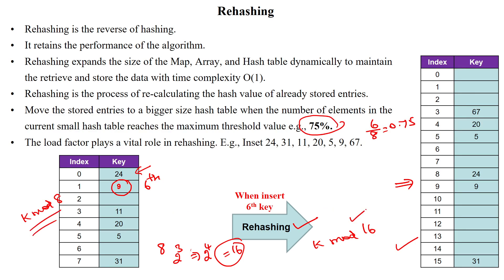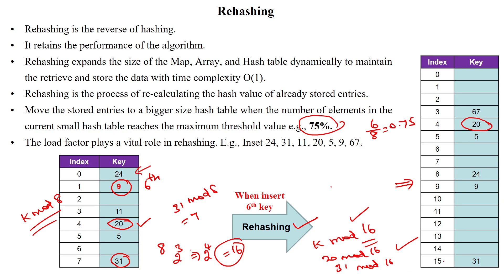Previously we applied K mod 8, but now we have to rehash and rearrange the elements based upon K mod 16. For example, when applying K mod 16, the value 20 is stored in the 4th location — same as before. For 31: 31 mod 8 gives 7, but 31 mod 16 gives 15. So 31 is stored in the 15th memory location. We have to rehash and rearrange the elements in the newly created hash table.